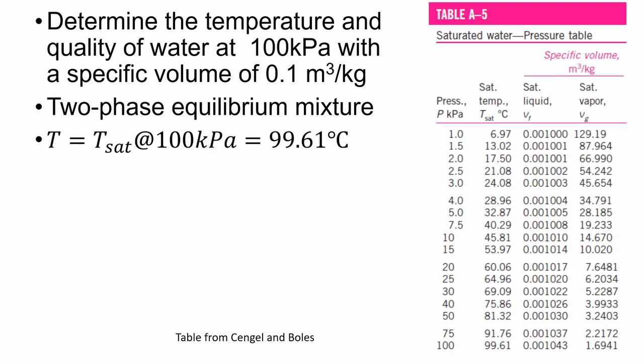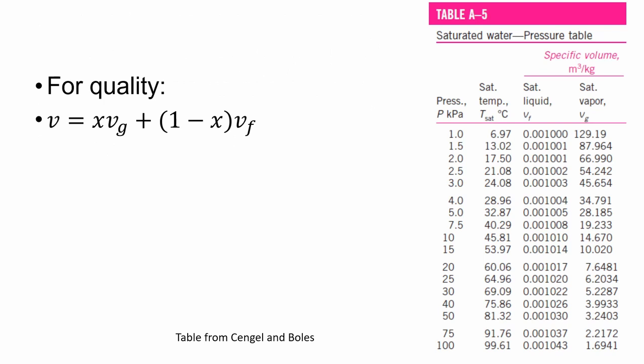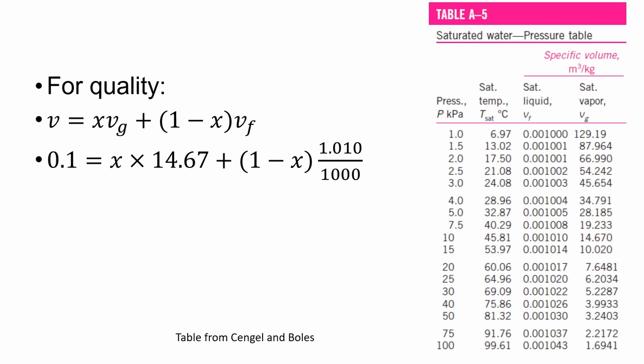Because it is a two-phase mixture, we immediately know that the temperature at 100 kPa is 99.61 degrees Celsius. Now we just need to calculate the quality. Using the quality equation with the unknown x, we know the specific volume at saturated vapor and at saturated liquid from the tables. Substituting in the known values, we solve for x and get x as 6.748 times 10 to the power of minus 3. You can pause this video and see if you can follow the steps and get the same answer.